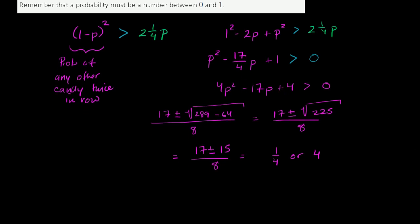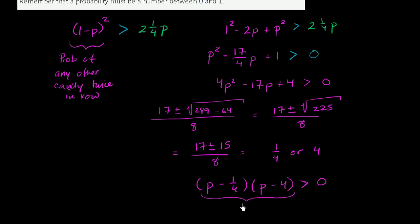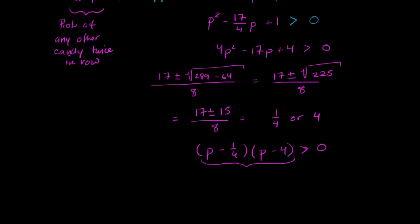We can factor this as (P minus 1 fourth)(P minus 4) is greater than 0. For the product of two terms to be greater than 0, they have to be the same sign — both positive or both negative.